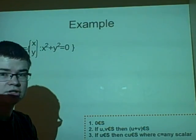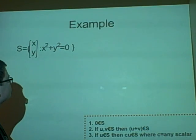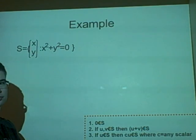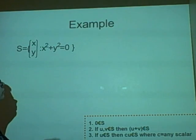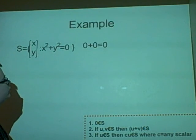And I think this is our last example. So, we have x squared plus y squared equals zero. So, the zero matrix first of all, zero plus zero does equal zero. So, that is true.